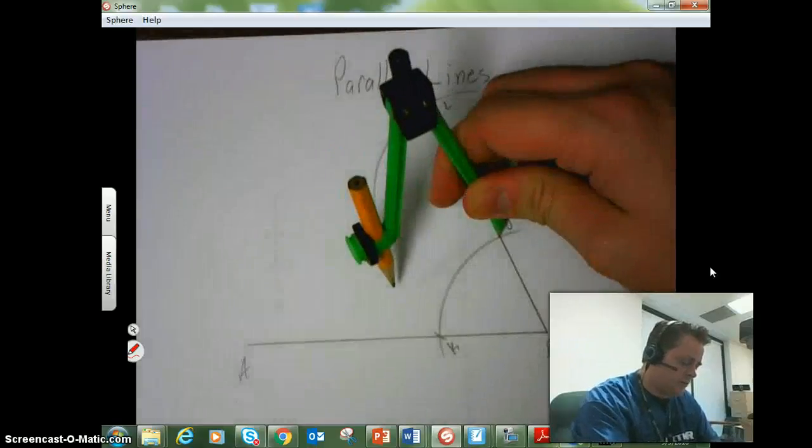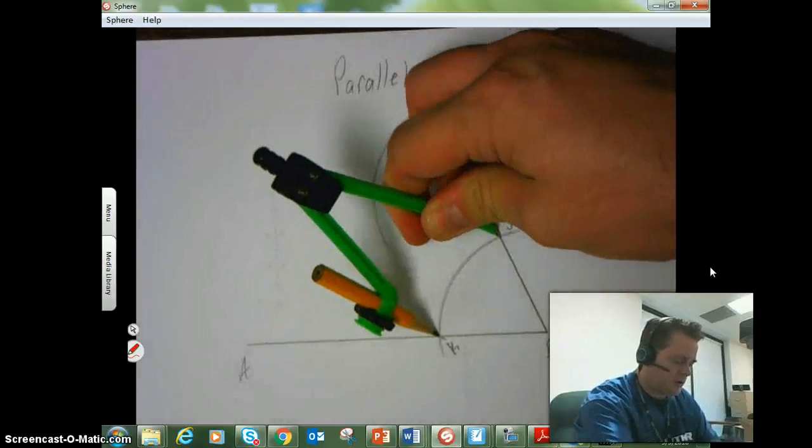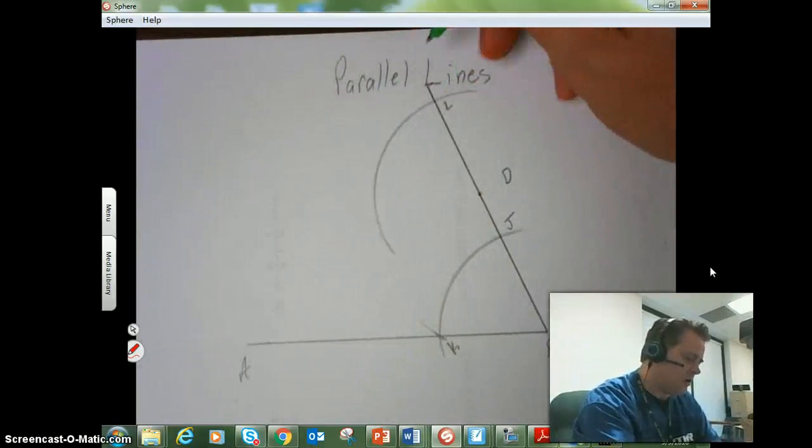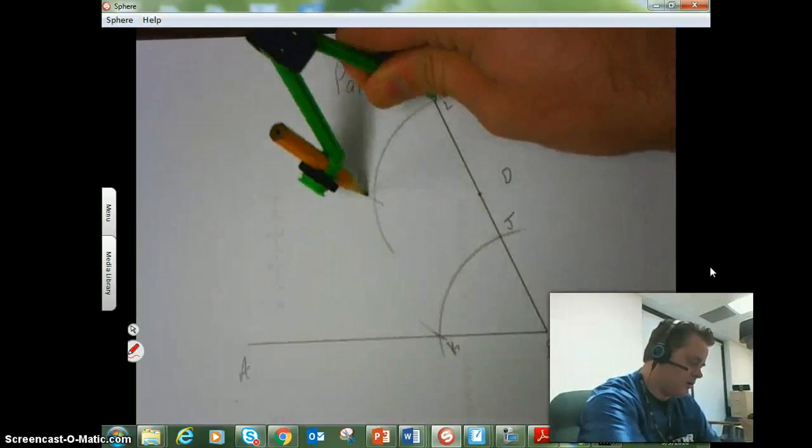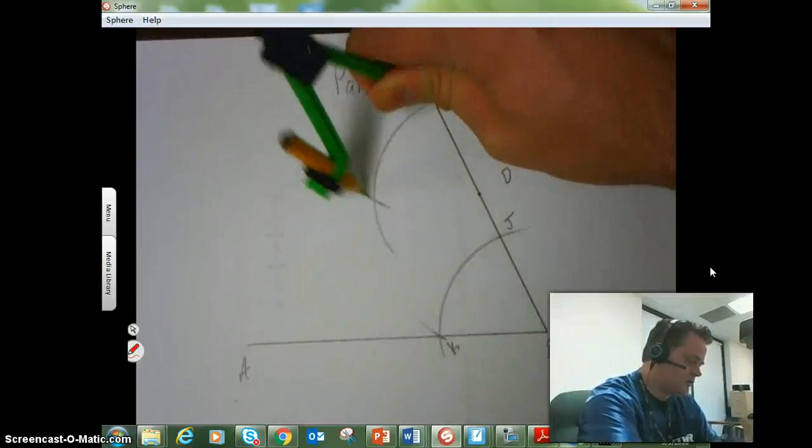So once we've opened up the distance here between J and K, I'm going to come up here to point L and mark where a new intersection would be.